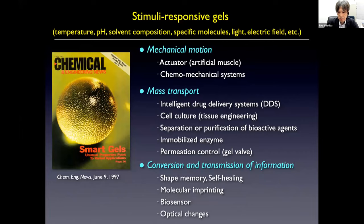Such stimuli-responsive features are studied as functional materials with a function of mechanical motion, such as actuators, artificial muscles, or intelligent drug delivery systems, tissue engineering, shape-memory materials, cell-free feeding materials, or application to biosensors. Such studies are actively and worldwide studied now.